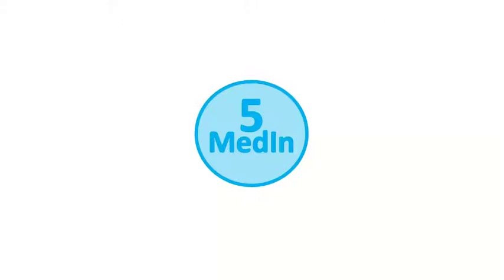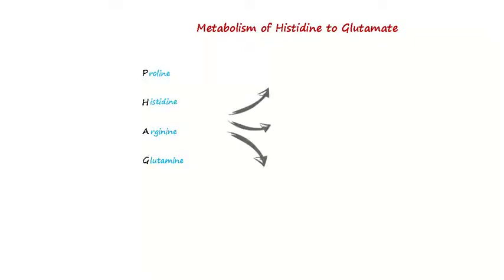Welcome to Med in 5 channel. This video will discuss the metabolism of histidine to glutamate. Histidine is one of the four amino acids that are metabolized into glutamate. Remember these amino acids with the mnemonic PHAGE. Let's discuss histidine metabolization step by step.